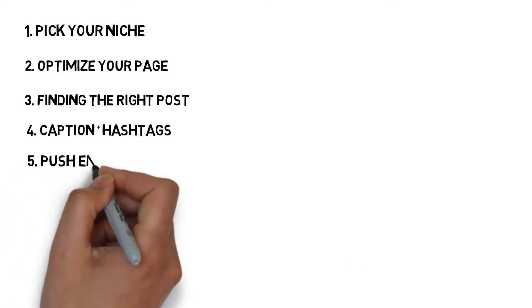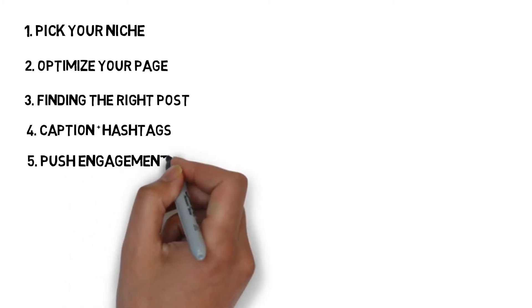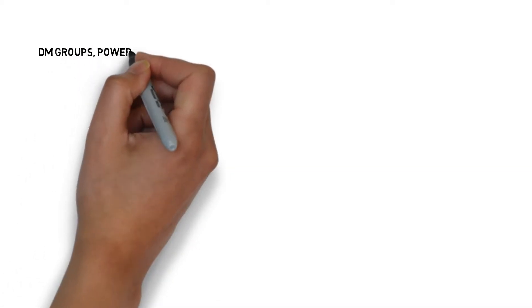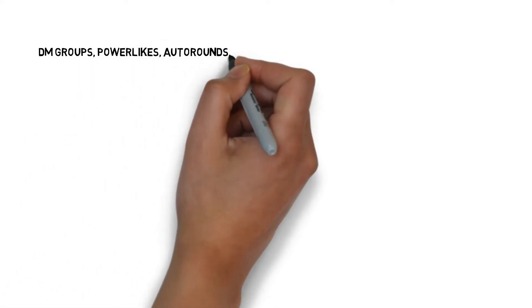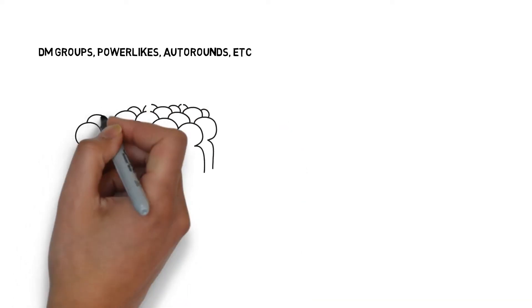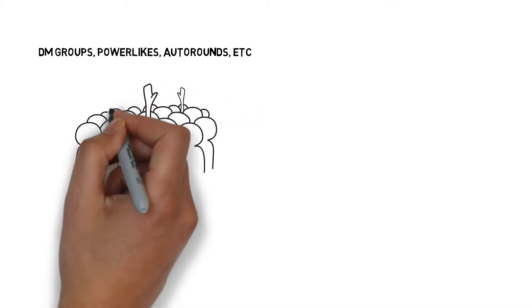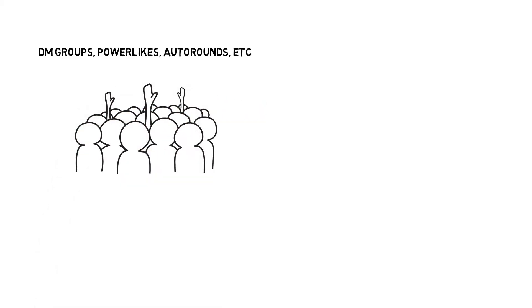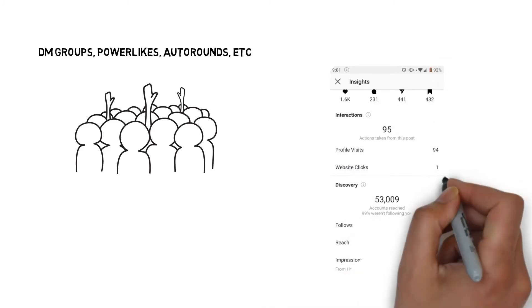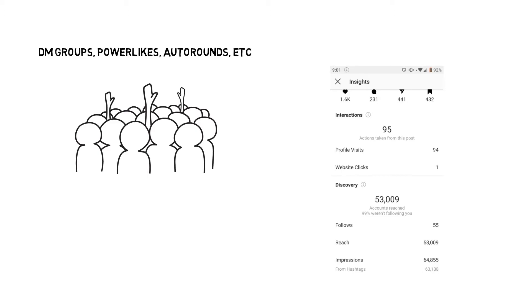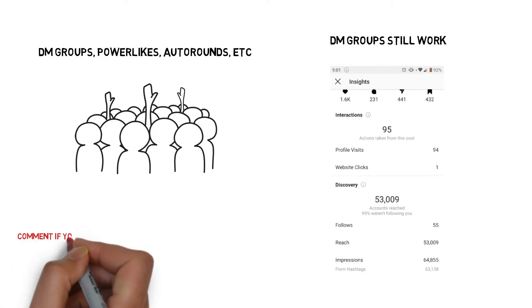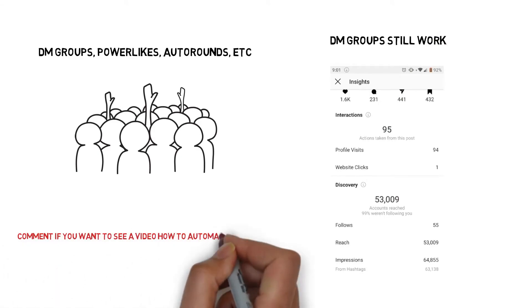The fifth step that will determine if your post goes insanely viral is pushing engagement — using DM groups, power likes, auto runs, or anything else you can get your hands on. DM groups don't work as well as they did a year ago, but since most power-like bots are currently down, engagement groups are your best option. I literally tested this method three days ago on a new account using only engagement groups from Instagram and Telegram, and my post hit 50,000 impressions in the first 24 hours.